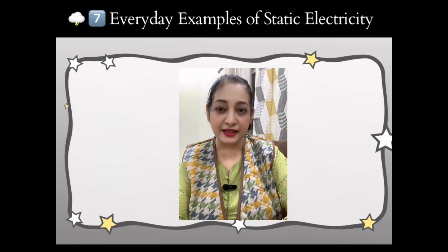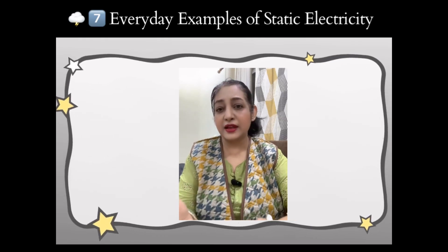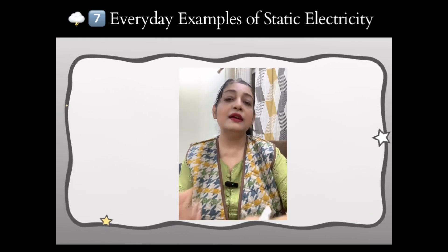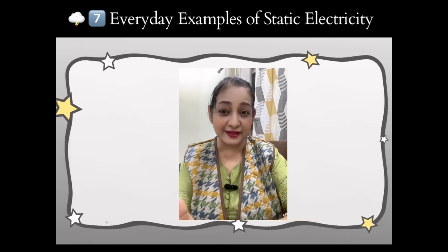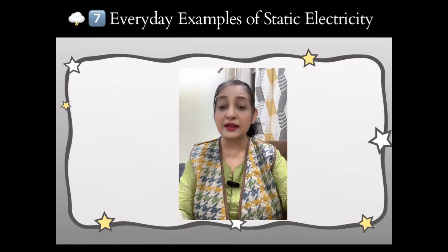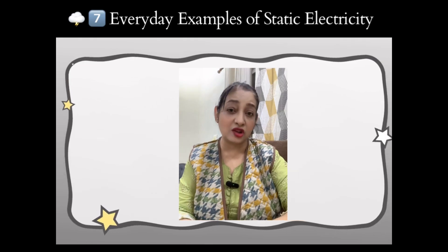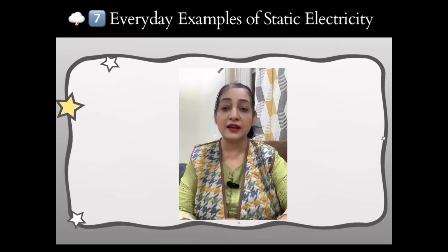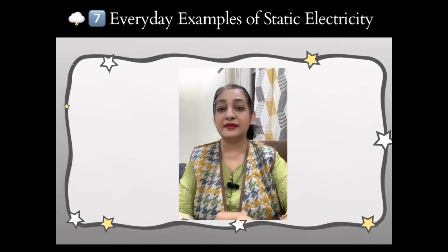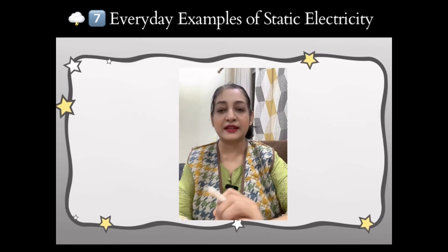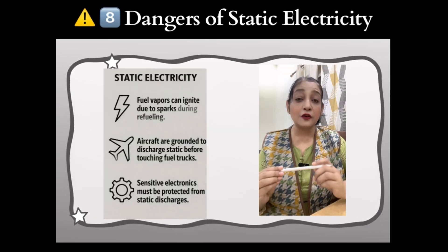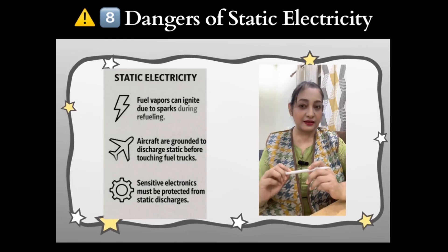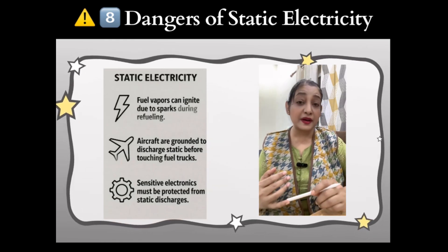Everyday examples of static electricity: clothes crackle when taken out of a dryer. Lightning is a giant discharge of static electricity between clouds and earth. Car paint spraying uses static charges to stick evenly. Photocopiers and laser printers use static charge to attract toner.